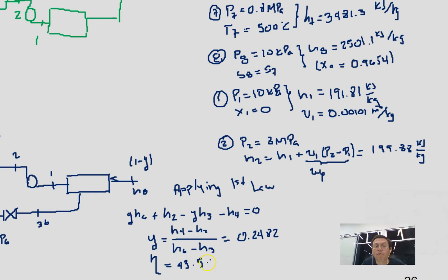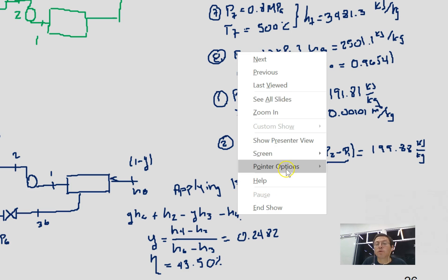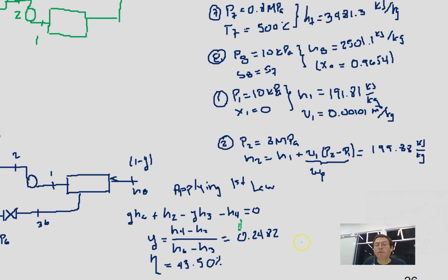Now in order for us to compare with the previous one, we know that in the open feedwater heater the fraction that we extracted was 20.16 percent, and the efficiency was 44.37 percent.